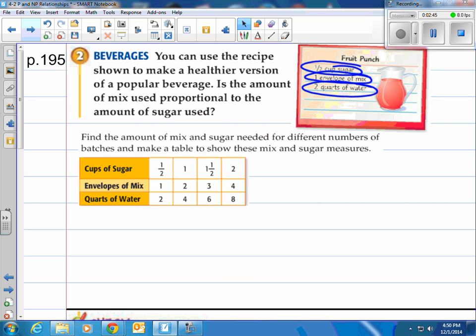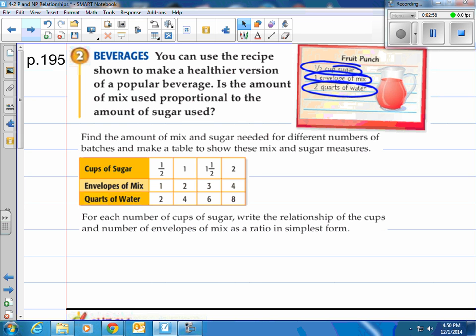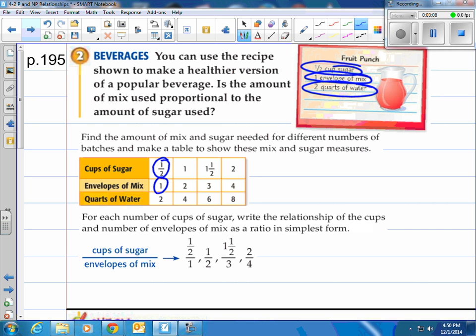So they've done it for us. We have cups of sugar, envelopes of mix needed, and quarts of water needed. They've done it for a half a cup of sugar, one cup of sugar, one and a half cups of sugar, and two cups of sugar. For each number of cups of sugar, write the relationship of the cups and number of envelopes of mix as a ratio in simplest form. So you'll see, they've taken the one half, put it over one, taken the one, put it over the two, one half over three, and two over four, all right here.